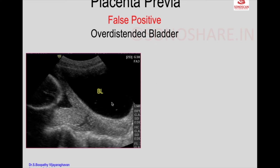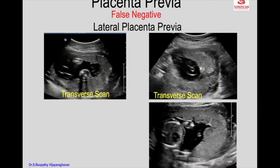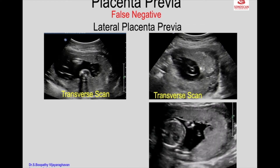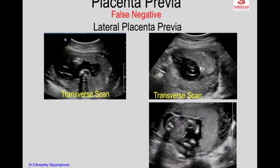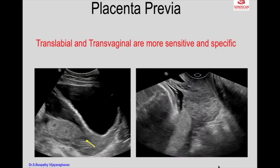Another false positive cause is an over-distended bladder. When the bladder is over-distended, the anterior and posterior walls of the uterus are opposed. As a result, the placenta's relation to the internal os cannot be assessed in a transverse or sagittal scan. A transverse sweep has to be done, and if the placenta comes low down, a coronal scan is applied. But it may not represent a partial or complete placenta previa as seen in the transabdominal scan.